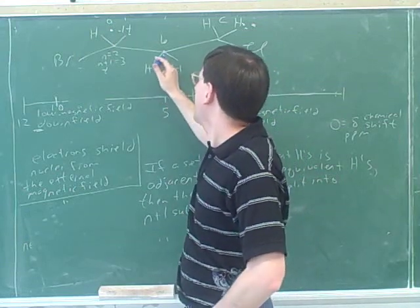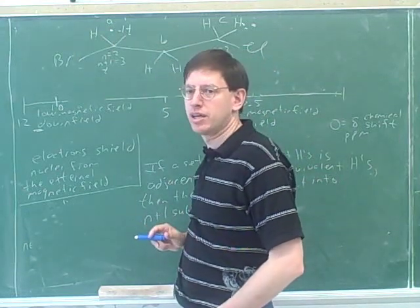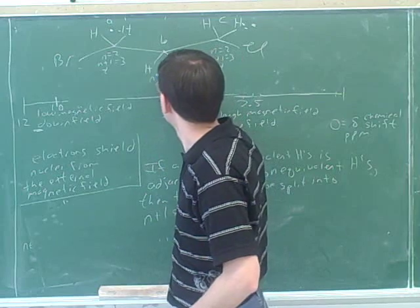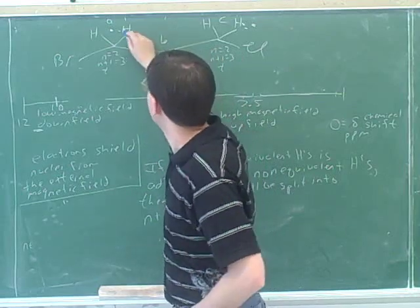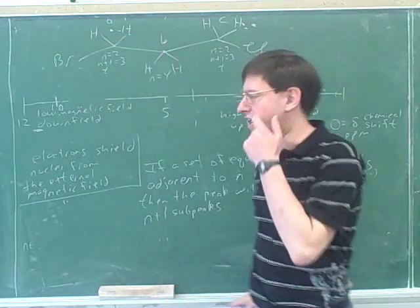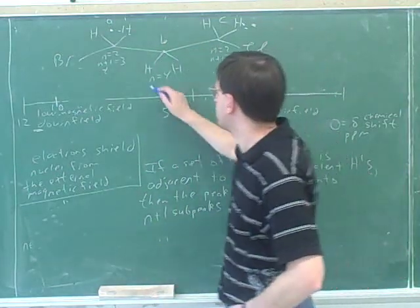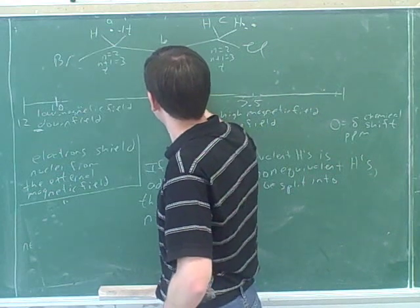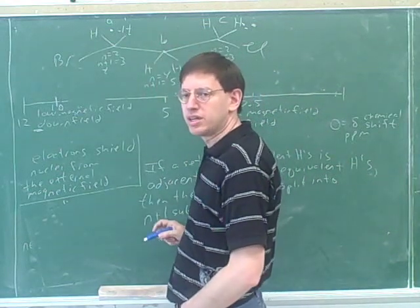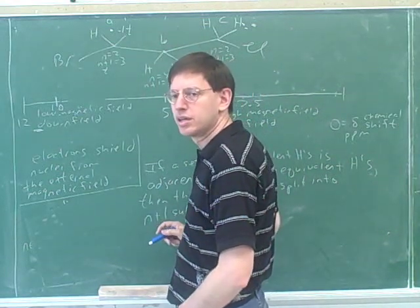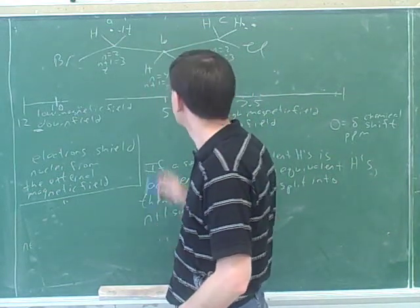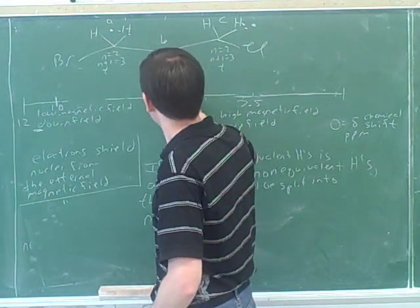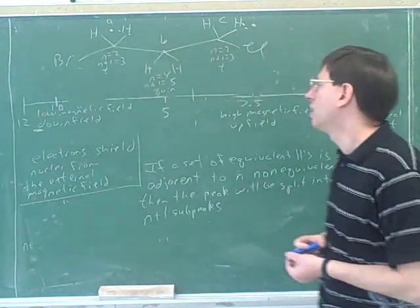How many hydrogens are adjacent to group B? Four — one, two, three, four. So n plus 1 would be 5, and then the splitting would be a quintet.